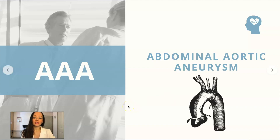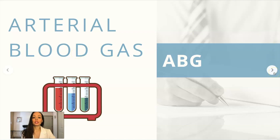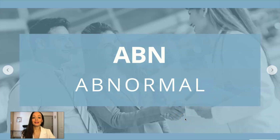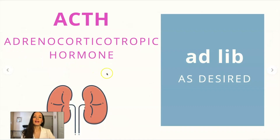AAA is an abdominal aortic aneurysm. That can be very dangerous — if it bursts, that is almost immediate death. ABD usually stands for abdomen or abdominal, so a patient may present with ABD pain. ABG is arterial blood gas, as in 'we have to get some ABGs on this patient.' ABN is abnormal. ABP is arterial blood pressure. And AC is before meals — you may see this on the chart in regards to insulin.